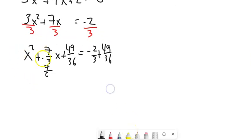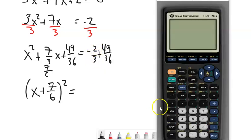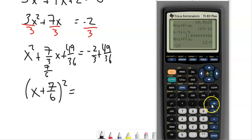And then I'd rewrite this as x plus 7 sixths squared equals whatever this is. I'll just do that on my calculator. Negative 2 thirds plus 49 36ths. Give me the answer as a fraction. 25 36ths.